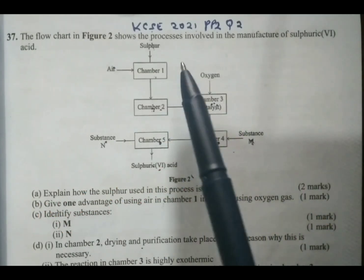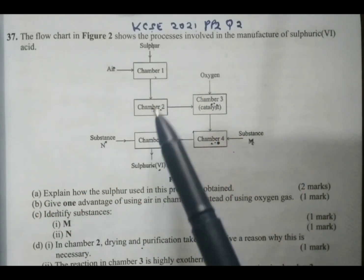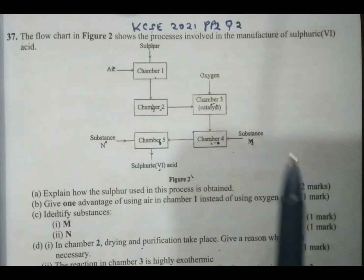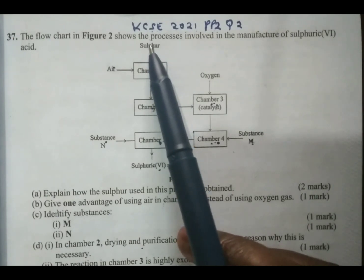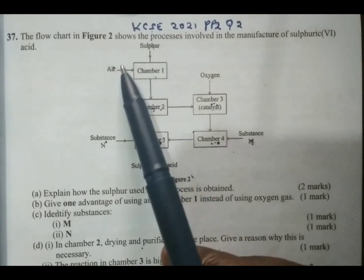Let us assess the flowchart before we go to the questions. We have the raw materials for the manufacture of sulfuric acid, and the starting materials or raw materials are sulfur and air.